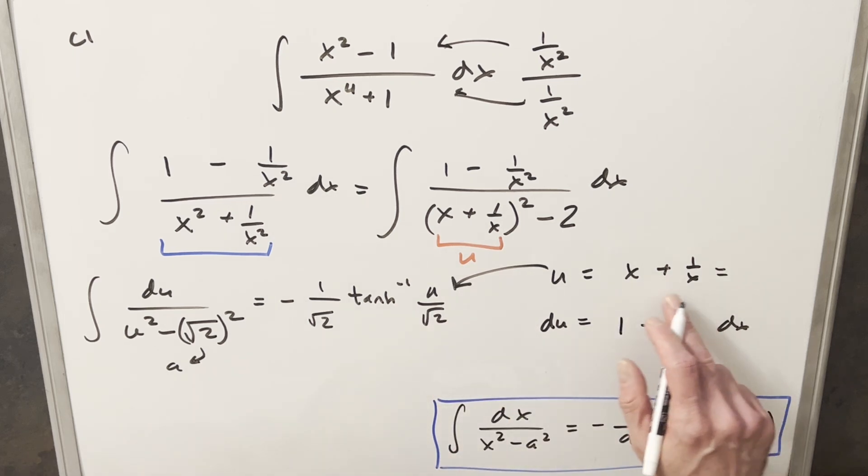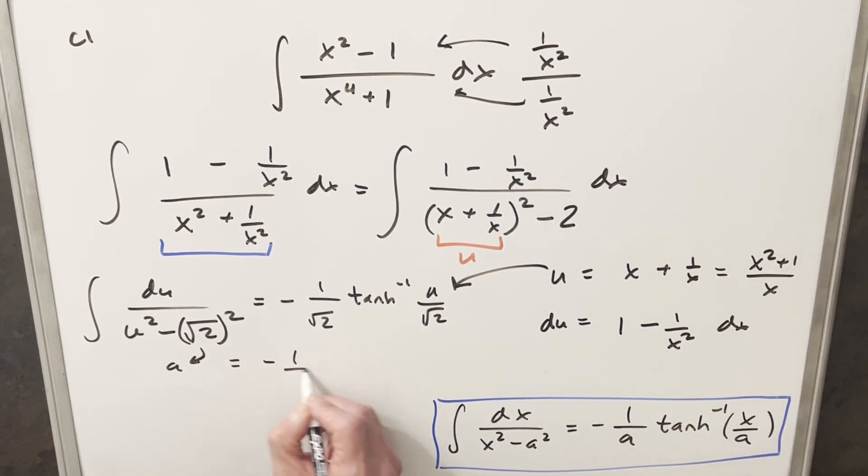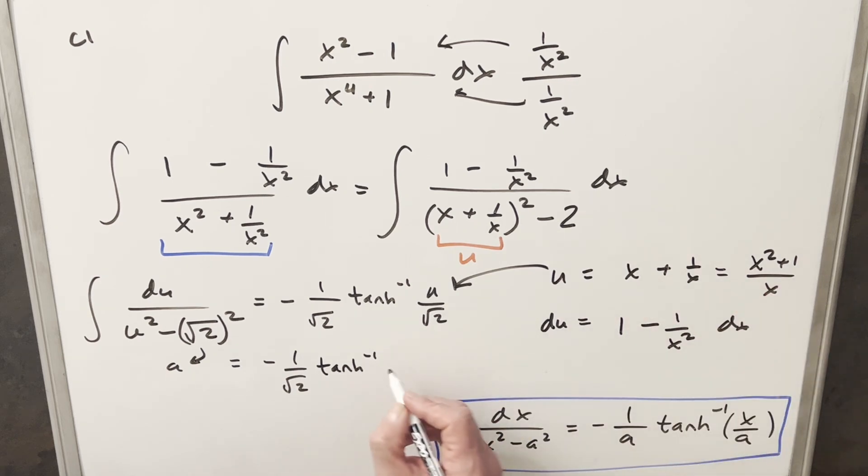I can actually get a common denominator and combine this. So I can write this as x squared plus 1 all over x. So now we'll do our back substitution. We'll have minus 1. So we'll have minus 1 over square root of 2. Tanch inverse.